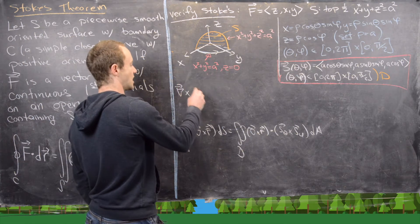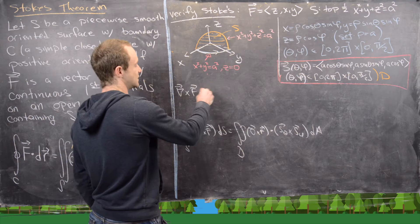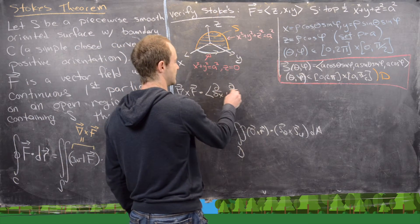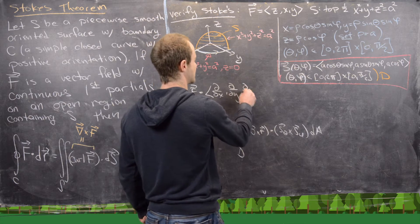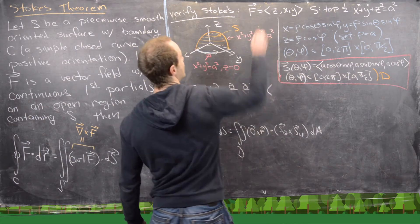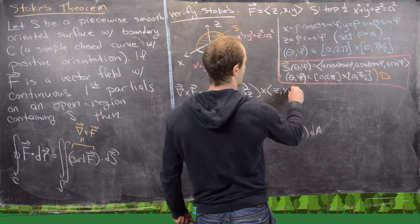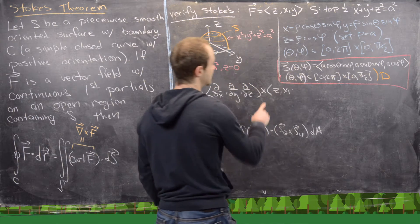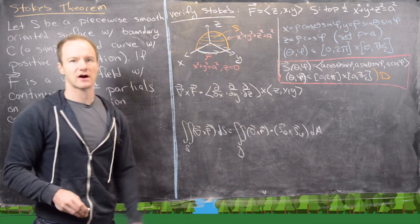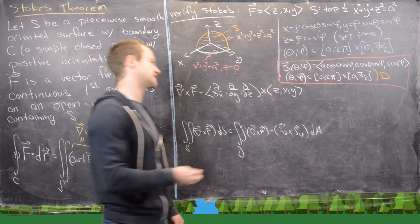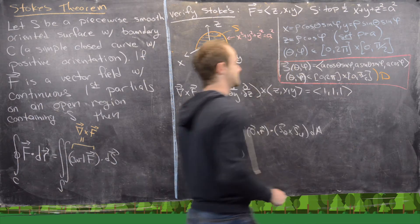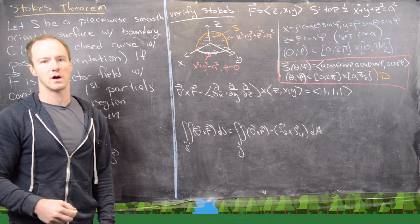For ∇ × F, we think of it as the derivative operator (∂/∂x, ∂/∂y, ∂/∂z) crossed with the vector field (Z, X, Y). That cross product is quite simple, and what you get for the curl is just the nice vector (1, 1, 1).